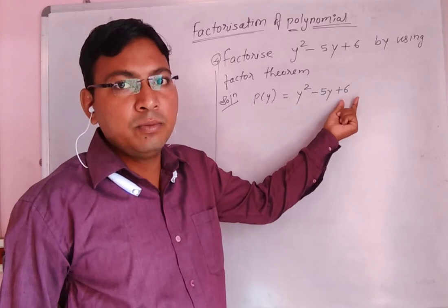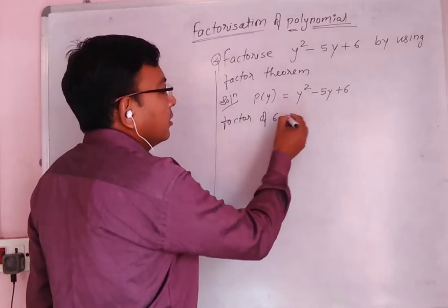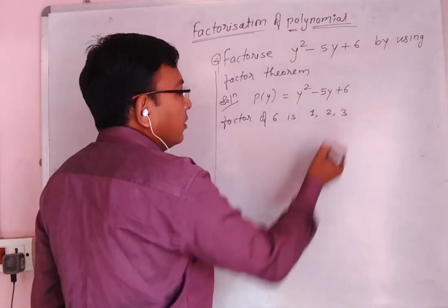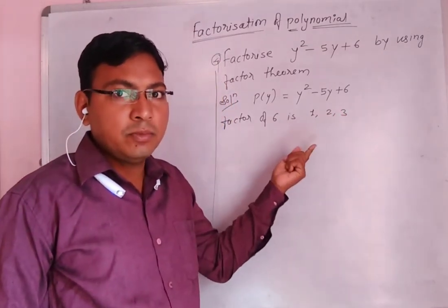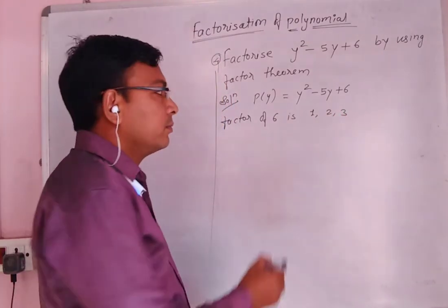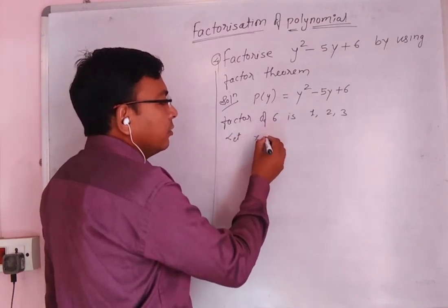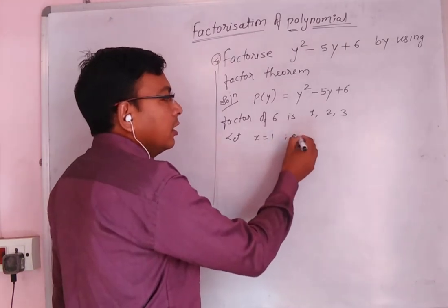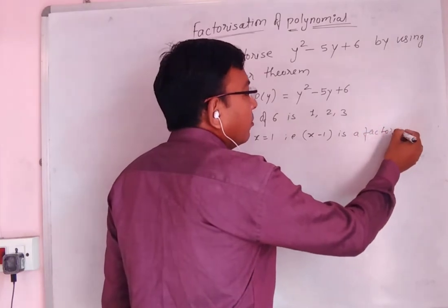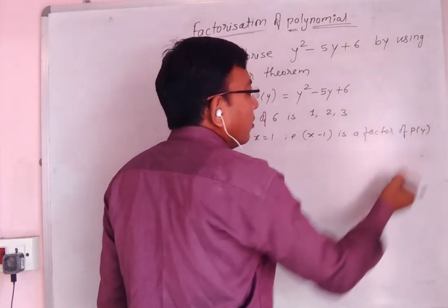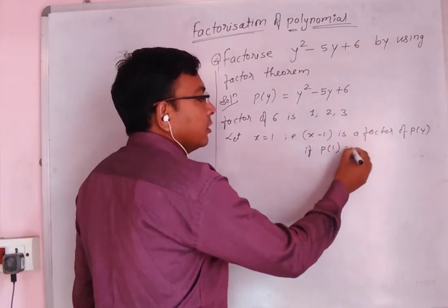We will find the factors of 6. The factors of 6 are 1, 2, and 3. We will consider x equal to 1, that is, x minus 1 is a factor of p of y if p of 1 is equal to 0.